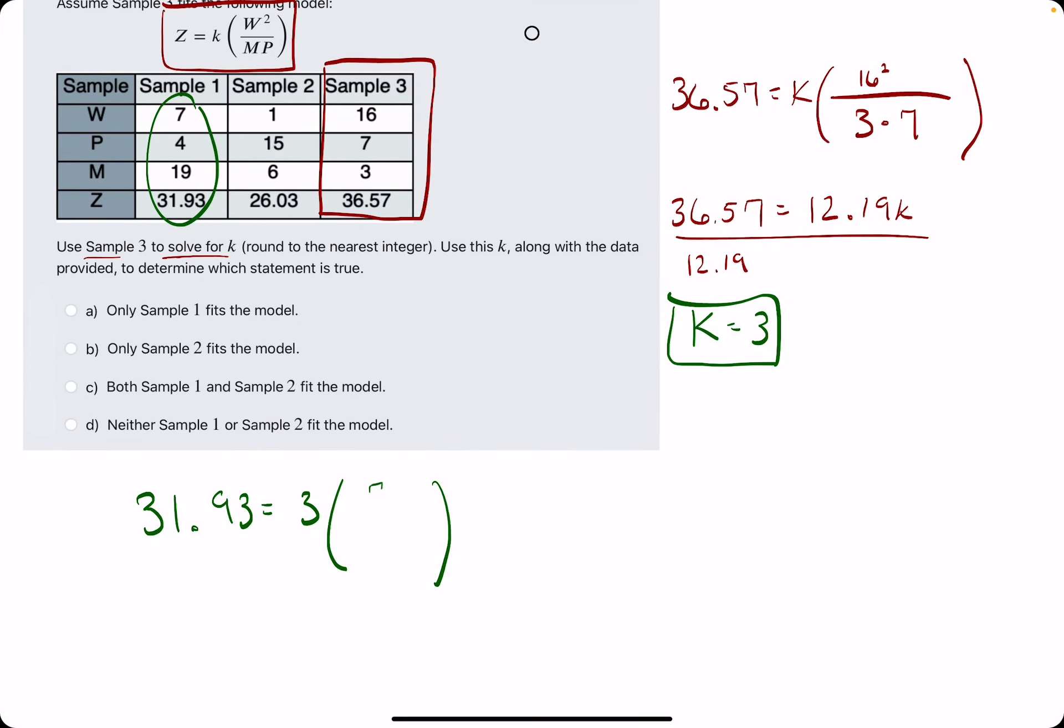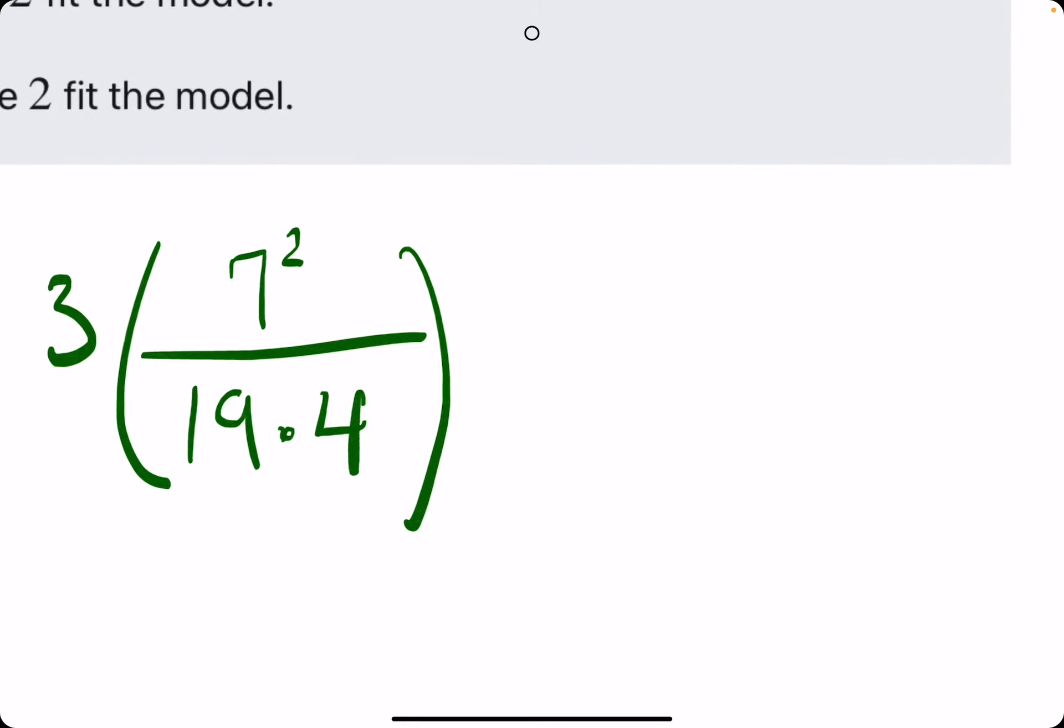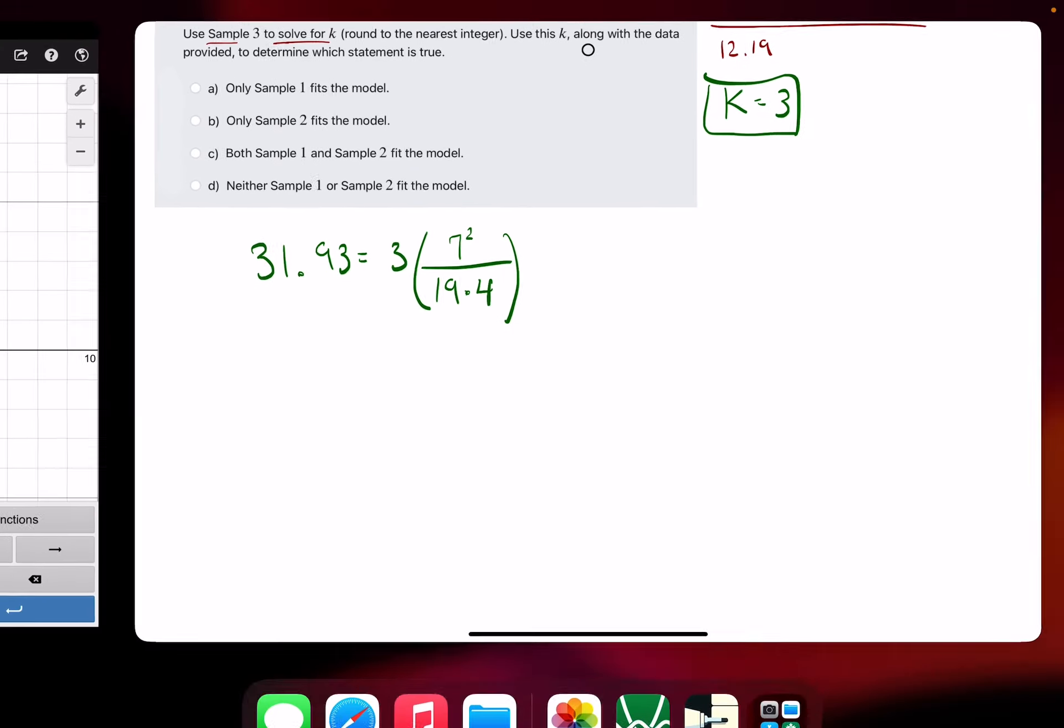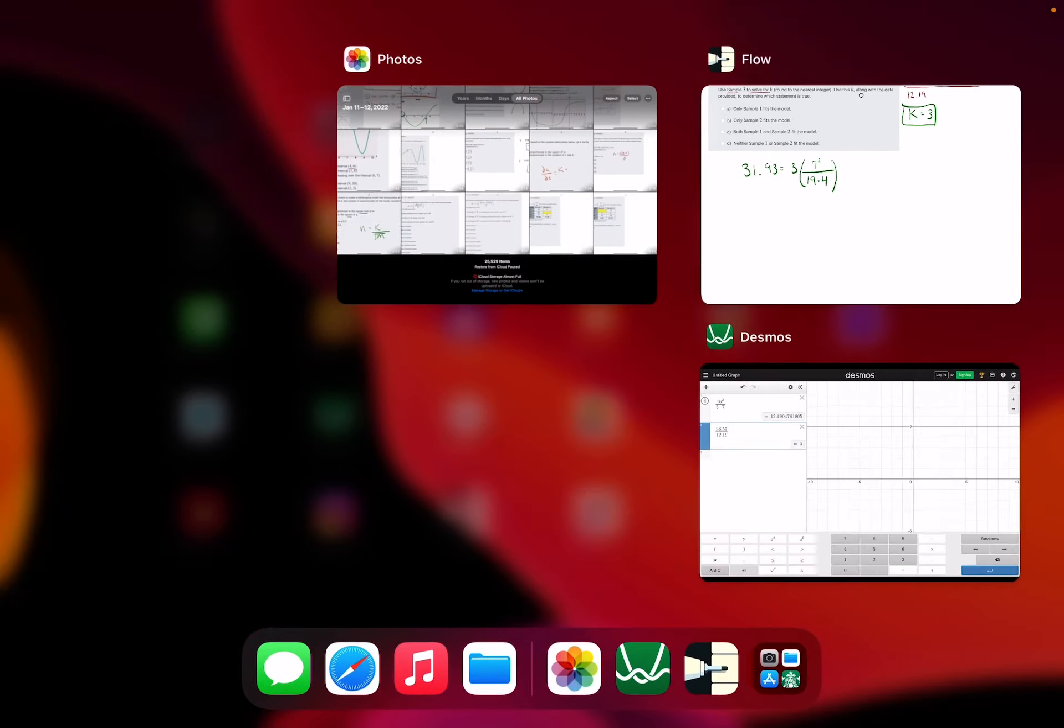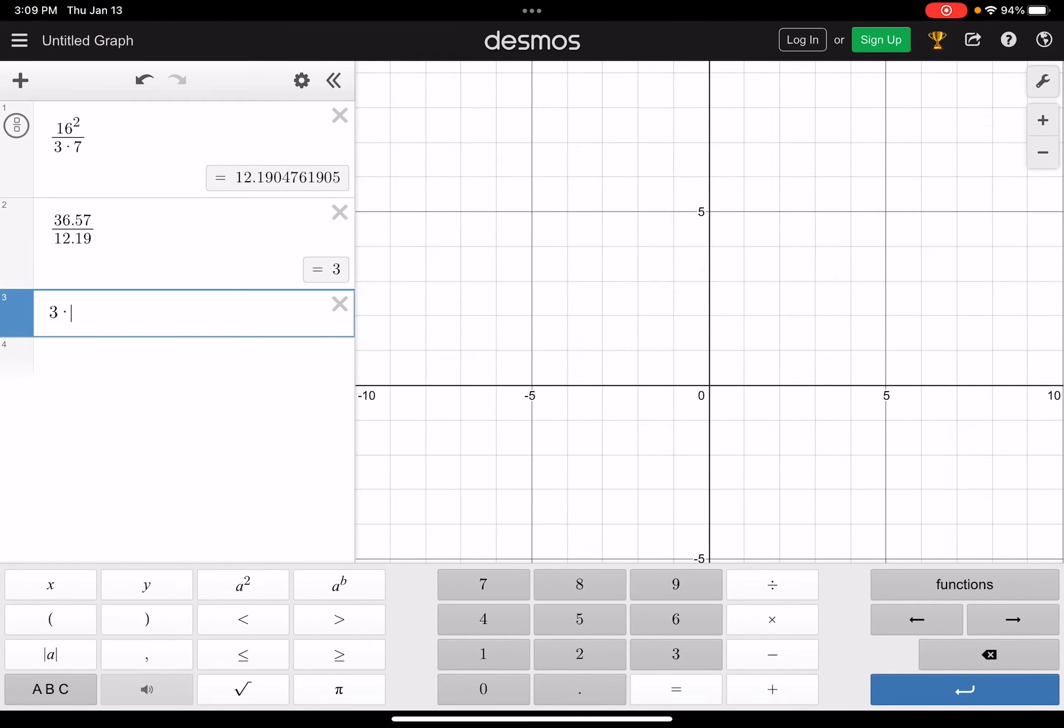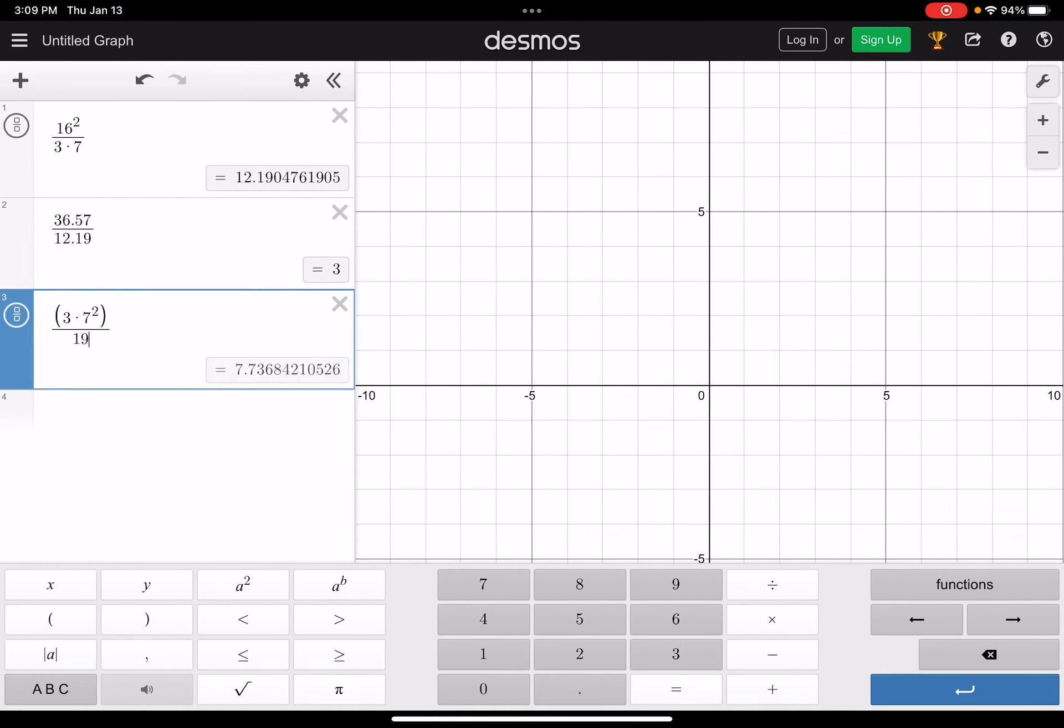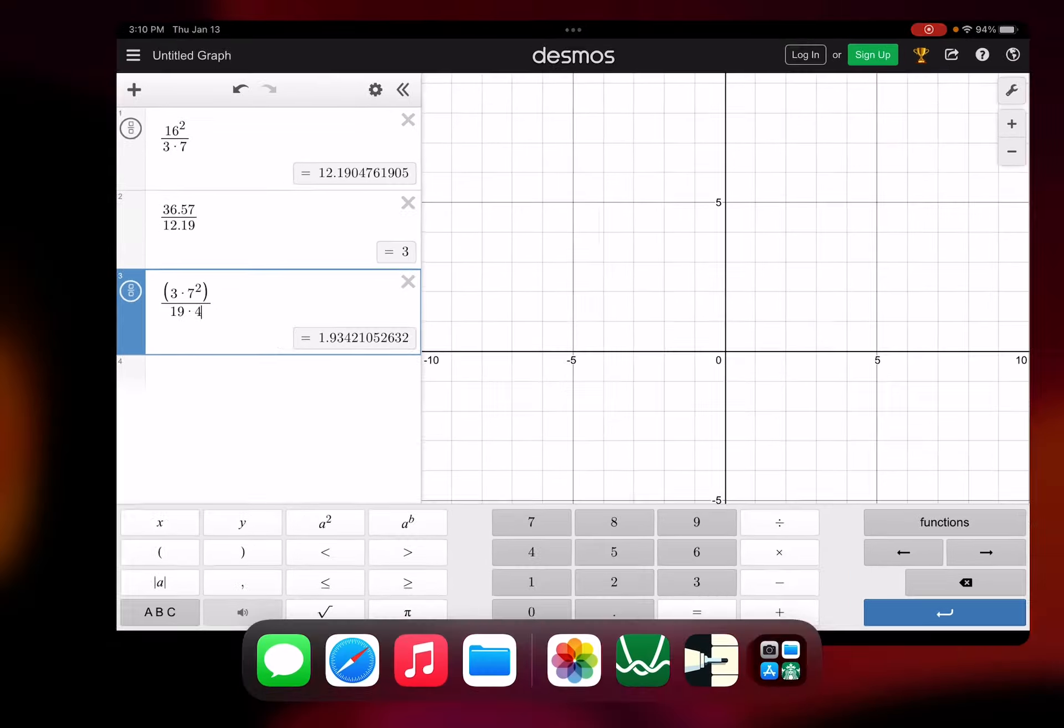So W squared would be 7 squared. M times P would be 19 times 4. So really, we're just checking that this right side, once we calculate it, is actually equal to 31.93. So let's break out Desmos. 3 times 7 squared, all divided by 19 times 4. And that gives us about 1.93.